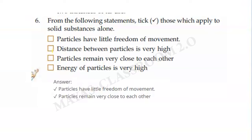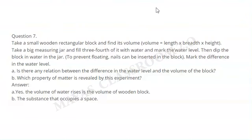Question seven: Take a small wooden rectangular block and find its volume. Take a big measuring jar and fill three-fourths of it with water and mark the water level. Then dip the block in water in the jar and mark the difference in the water level.